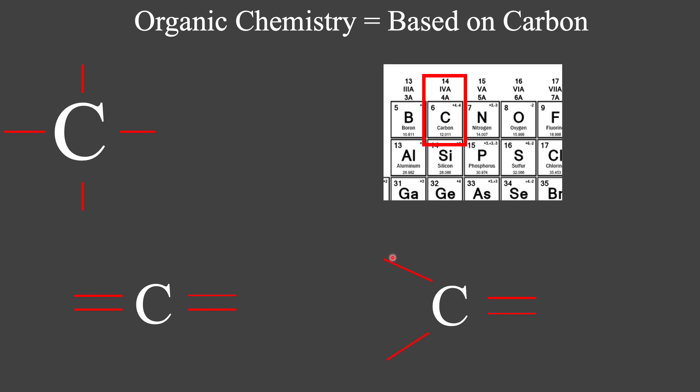Just count the bonds. 1, 2, 3, 4. We have 4 bonds, we're good to go. And this is the most basic thing that you should know about carbon. It can always make, it's looking to make 4 bonds. That is stable for carbon. That's what it does.